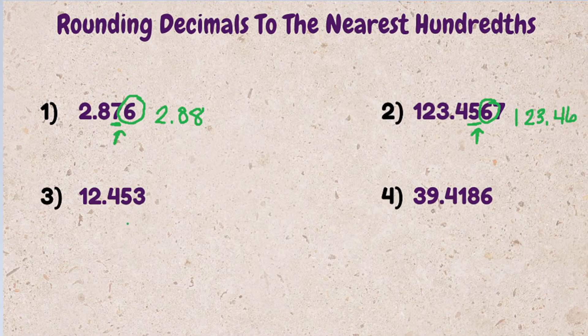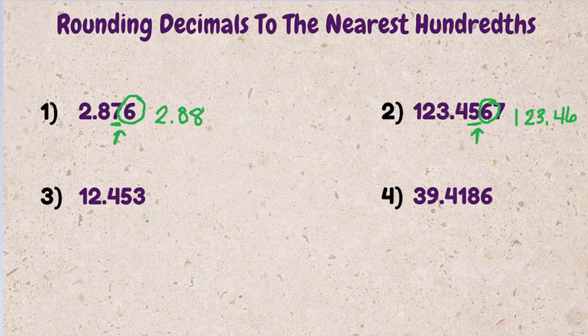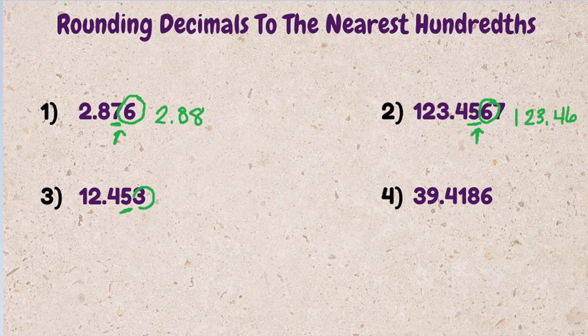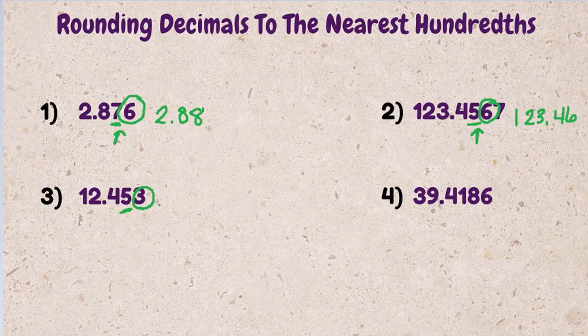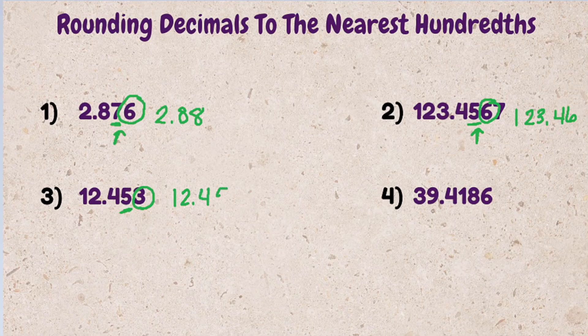Example three, 12.453. Again, five is in the hundredth spot. The number to the right is three. If it's four or lower, we round down, or it stays the same, which means 12.453 rounds to 12.45.